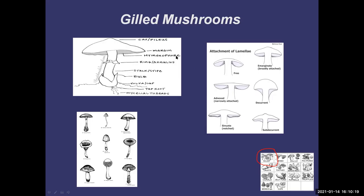When looking at gilled mushrooms, you don't just want to look at the cap and stem, but also how the gills look and how they attach to the stem. Are they free — not touching the stem at all — or are they attached? Do they run down the stem all the way or part way? Are they notched? Because when you look it up in your mushroom book, those are the features they'll describe.